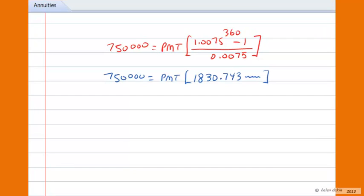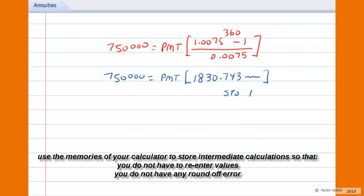And so now when you're solving this equation for the variable PMT or the payment size, you can easily see that you can work out the annuity factor on your calculators. Work out the annuity factor and that number turns out to be 1830.743 and a whole bunch of other digits. Store that number, store it in memory 1 if you'd like, because you don't want to have any round-off error. So store it in memory 1 and then to solve for the payment size, what you're going to be doing is taking the $750,000 and dividing by that recall 1 or recall that number. So $750,000 divided by 1830.743 and all of that other display.